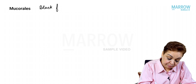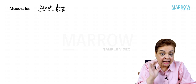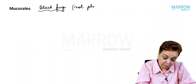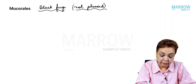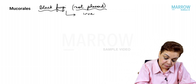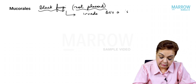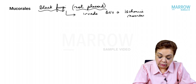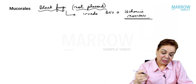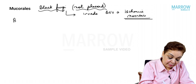Mucorales became famous during COVID times as the 'black fungi.' However, they don't have melanin in their hyphal walls — they are not phaeoid fungi. They are called black fungi because they invade blood vessels, causing ischemic necrosis, which turns the tissues black.